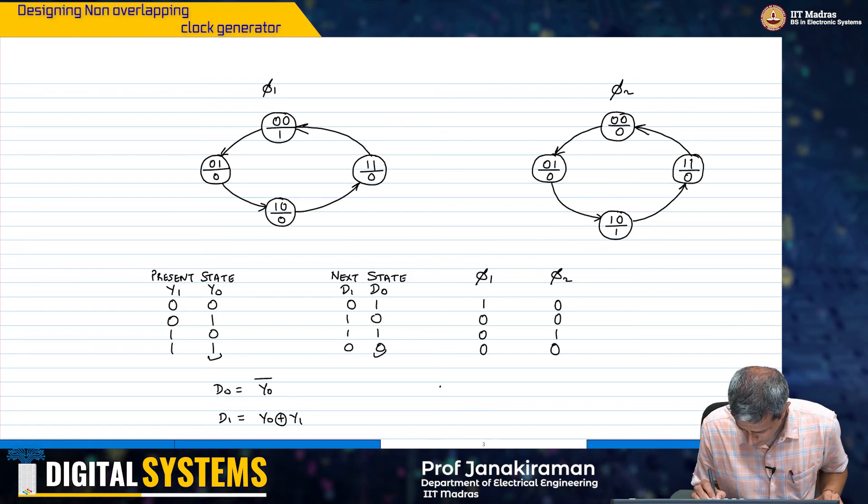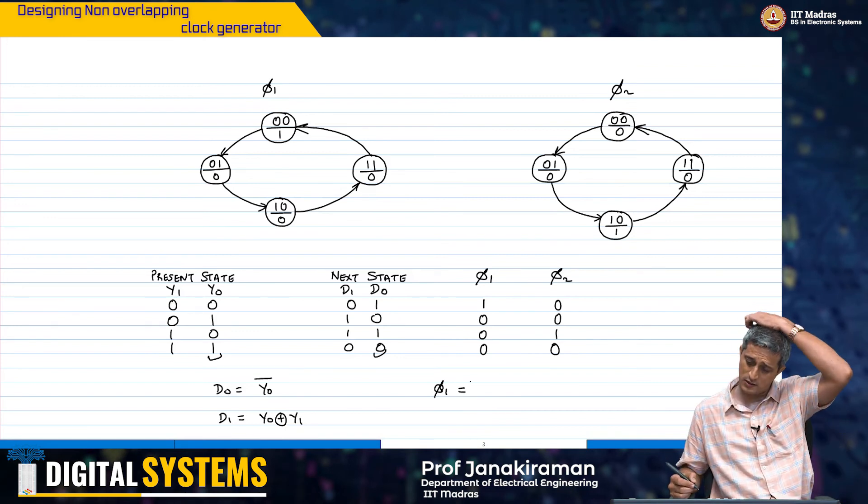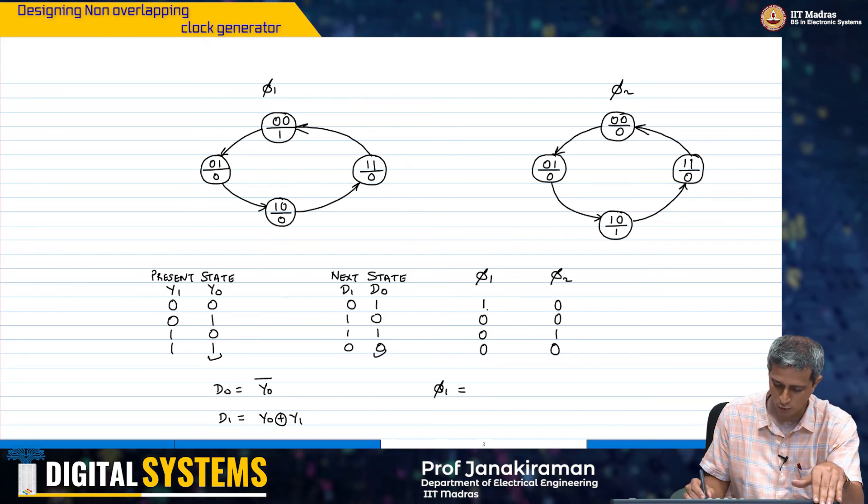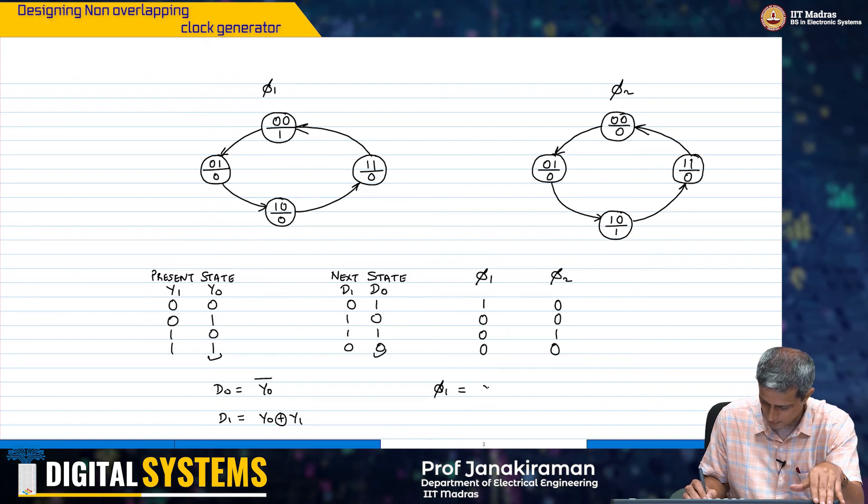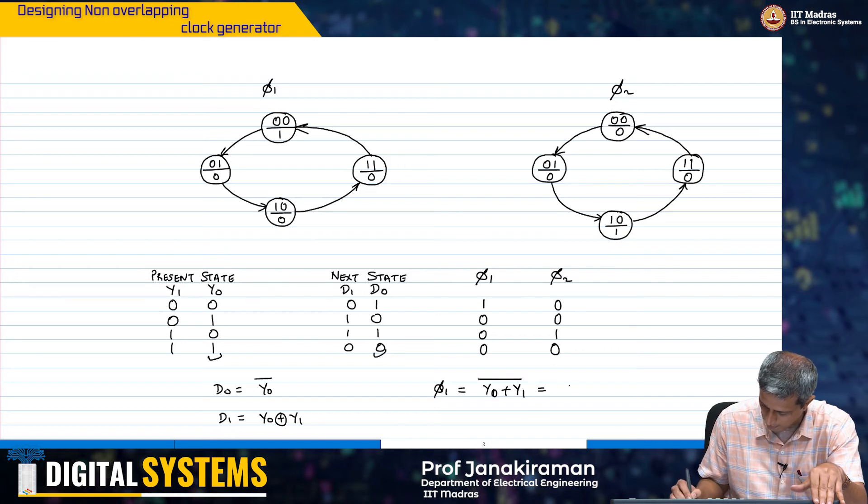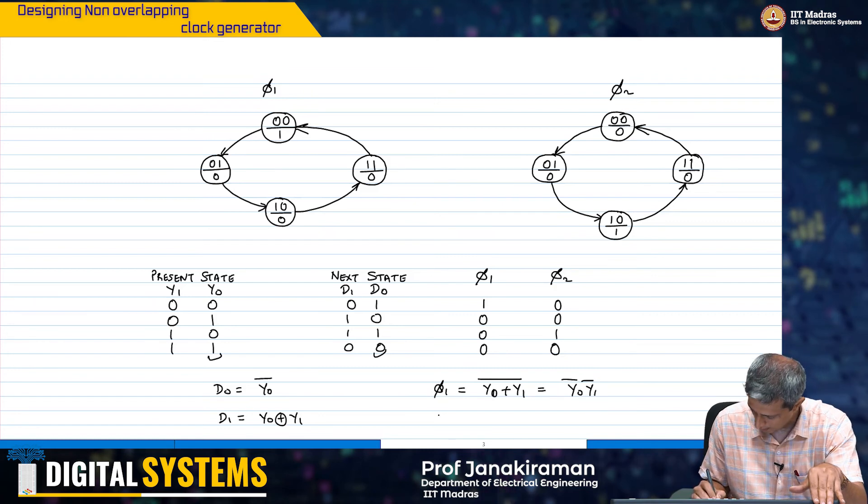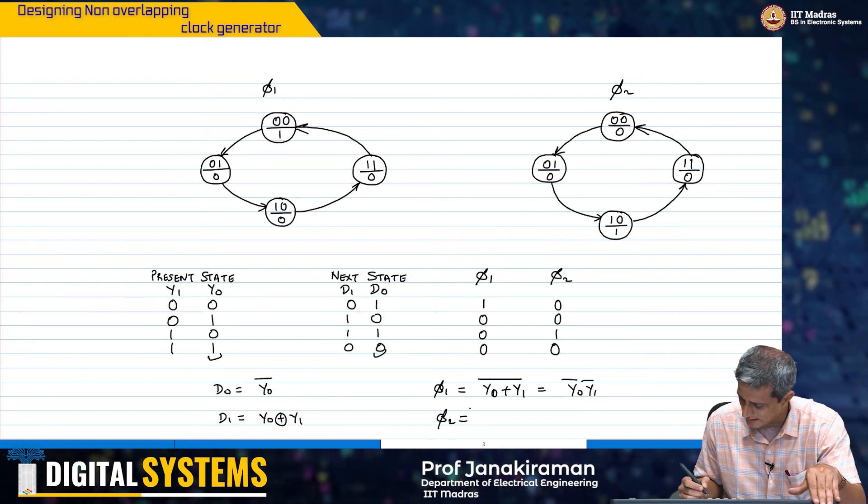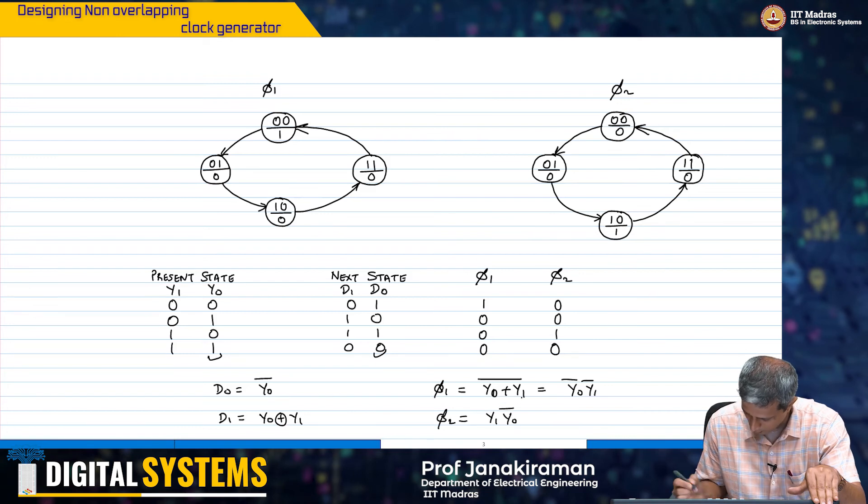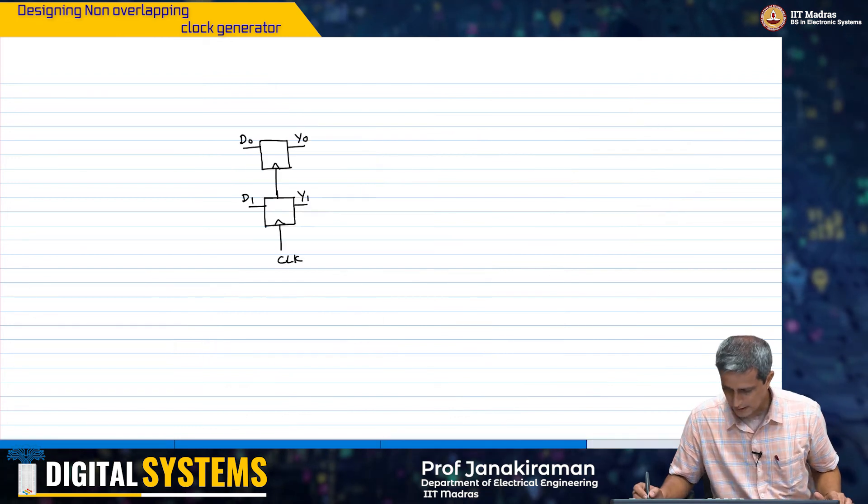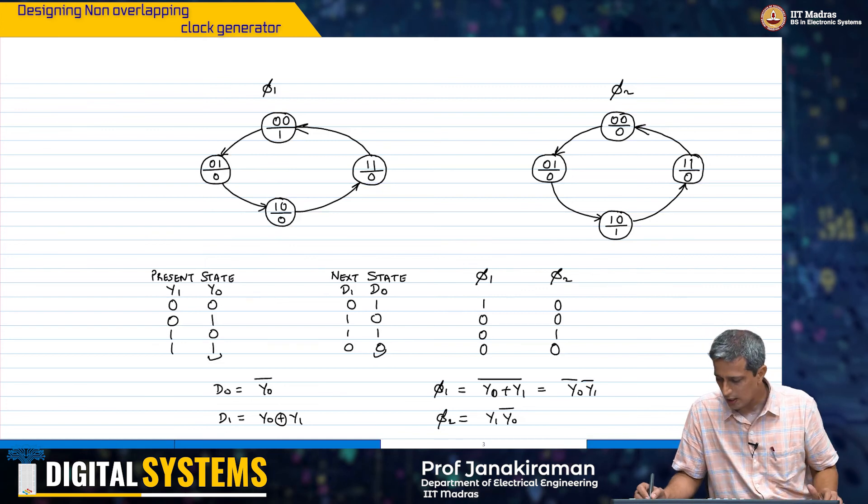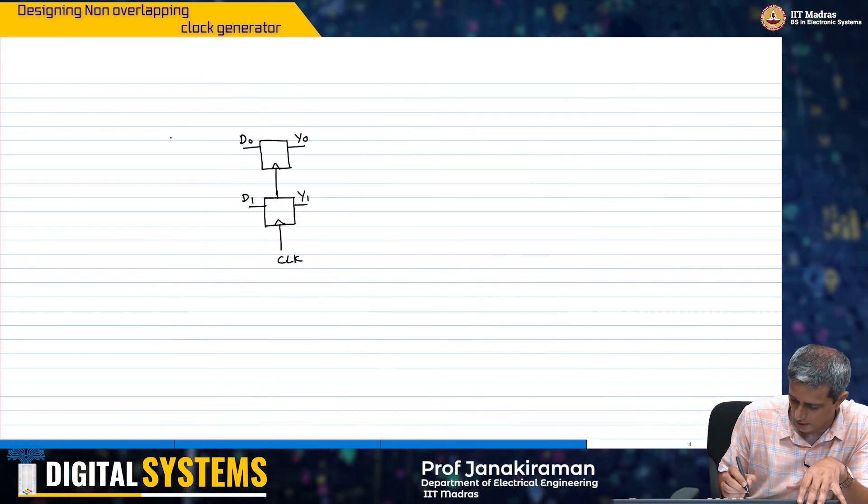Now what about my phi 1 and phi 2? Phi 1 is simply, if you look at this, this is a NOR gate. When both are 0 the output is 1. So phi 1 is y 1 bar y 0 bar. Phi 2 is basically going to be y 1 y 0 bar. Effectively we have been able to get all the Boolean functions that we wanted from this state table and we can go ahead and implement this particular function now.